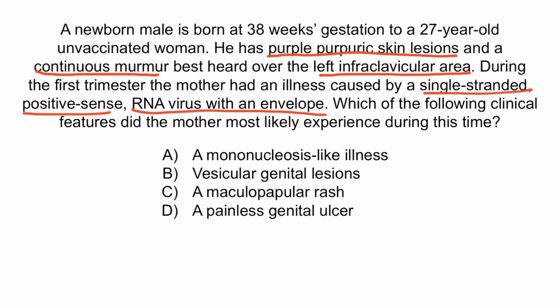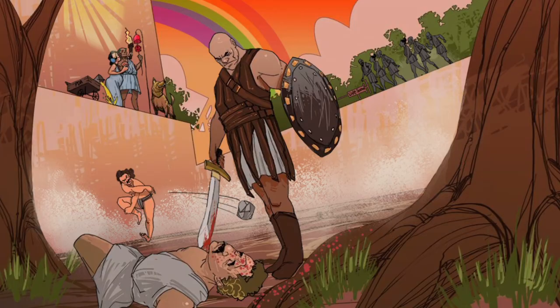From the question stem, we can see that the infant is presenting with purple purpuric skin lesions, which describes a blueberry muffin rash. He also has a continuous murmur best heard over the left infraclavicular area, which describes a patent ductus arteriosus. These two findings are pretty unique to Rubella, which is confirmed when we're told the mother had an illness caused by a single-stranded positive sense RNA virus with an envelope. Therefore, we can be certain that this child's condition was caused by congenital Rubella infection. The correct answer is C, a maculopapular rash.